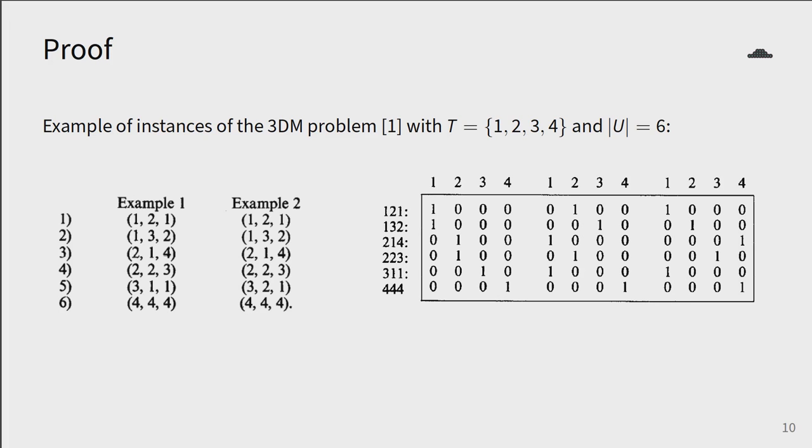Here is an example for the 3DM problem. We take the set T equals 1, 2, 3, 4, and the subset U of size 6. On the left, both examples 1 and 2 consist of six ordered triples, all drawn from T^3. On the right, we have an alternate representation of example 1, called an incidence matrix.